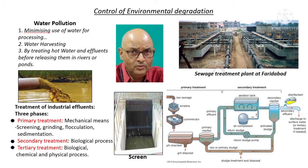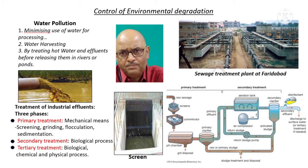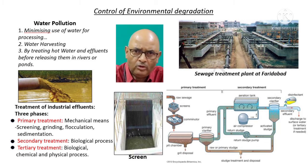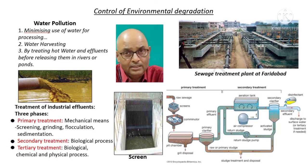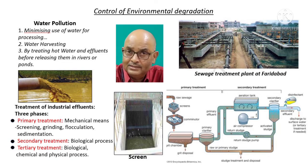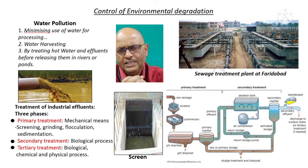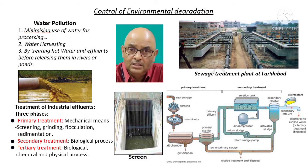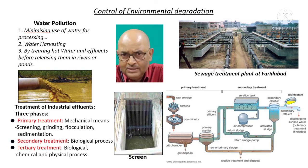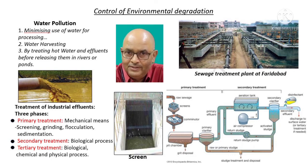Then comes flocculation. Flocculation is a process by which a chemical coagulant called a flocculant is added to the water to help remove materials suspended in water. Flocculant facilitates bonding between particles, creating larger aggregates of fine particles which float on the surface or settle at the bottom. These impurities can then be easily removed from the liquid.